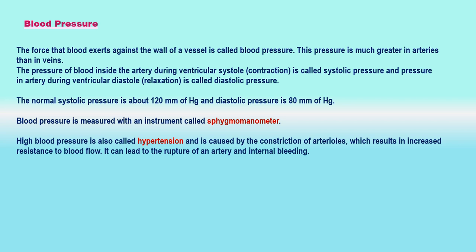Blood pressure is expressed in terms of millimeters of mercury, written as mmHg. The normal blood pressure values are: systolic pressure 120 mmHg and diastolic pressure 80 mmHg. Blood pressure is measured with an instrument called a sphygmomanometer. High blood pressure is also called hypertension and is caused by the constriction of arterioles, which results in increased resistance to blood flow. It can lead to the rupture of an artery and internal bleeding.